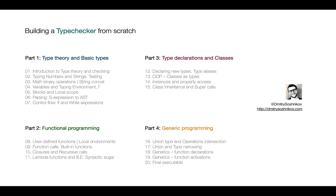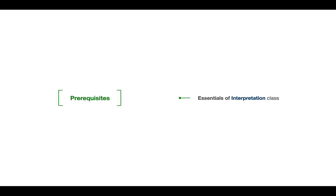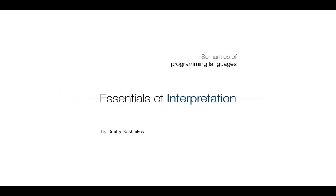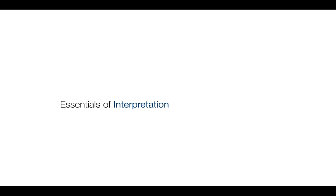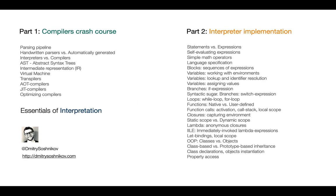So here's the agenda. The first thing we need to say: there is an optional prerequisite for this class, and this is the Essentials of Interpretation class, where we build an interpreter for a programming language at a very high level, at the AST level. Unless you're familiar with concepts such as abstract syntax trees, how eval works, what is closure, scope chain, identifier resolution, etc., it is highly recommended to take this course.